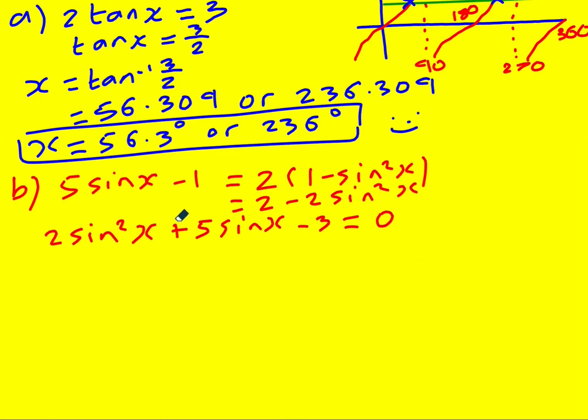So there's different things you can do at this point. You might do a substitution, u equals sine x, to get 2u squared plus 5u minus 3 equals 0, solve for u, and put it back in terms of sine x. You might use the quadratic formula, or you might just factorize it directly in terms of sine x, which is what I'm going to do. Because it's just good practice really - check with your calculator by all means.